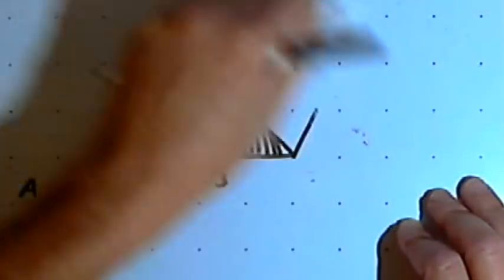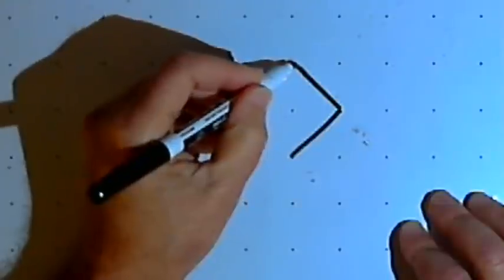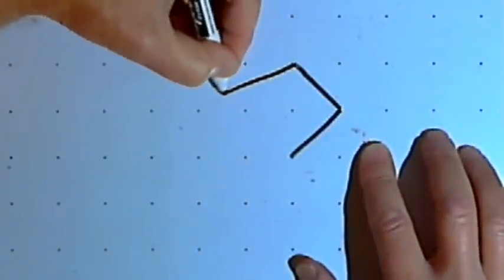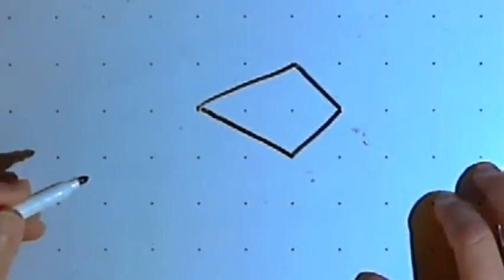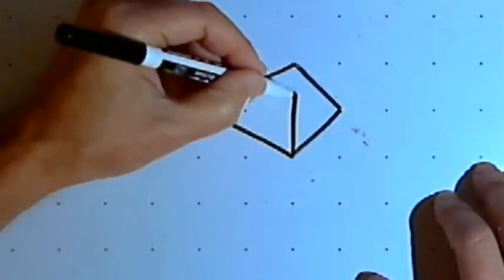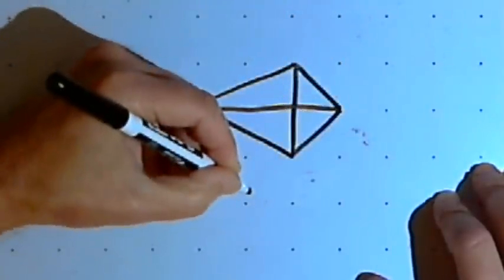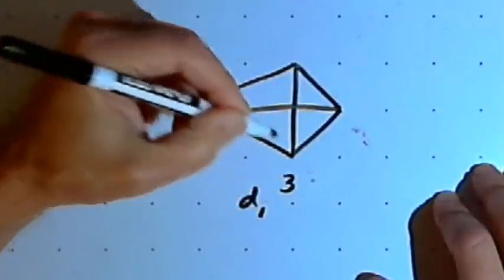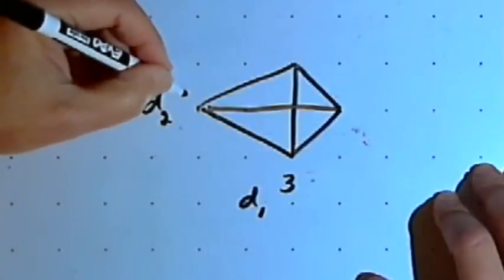Let's go on to kites. A kite is a quadrilateral with four sides. Two of the adjacent sides are congruent, and the other two sides are also congruent. When we measure kites, we measure the two diagonals: there's a shorter diagonal and a longer diagonal. I'll call the longer diagonal d sub 1, which has a length of 3, and the shorter diagonal d sub 2, which has a length of 2.